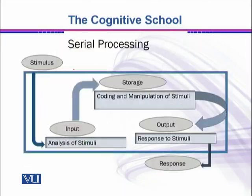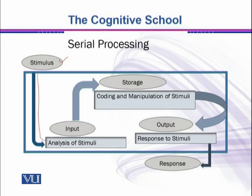Let's have an overview of what serial processing is. The serial information processing diagram explains how serial processing is done. For example, you are watching this video right now — this video can be termed as a stimulus, something which is happening around you. This stimulus is going inside your mind and serving as an input for the analysis of stimuli. Your mind is analyzing what kind of information this is and what this video is about, and that information is quickly formulated and processed. Then it is stored inside your mind.